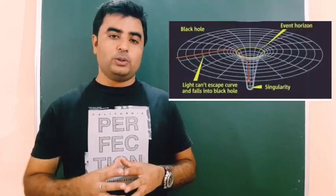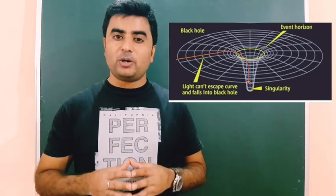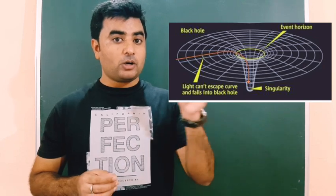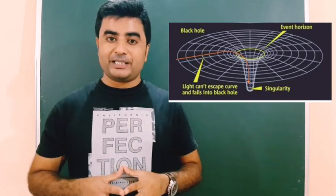Near the black hole, space-time is distorted and the photon basically still moves on a straight line but on a distorted path or on a distorted space-time.